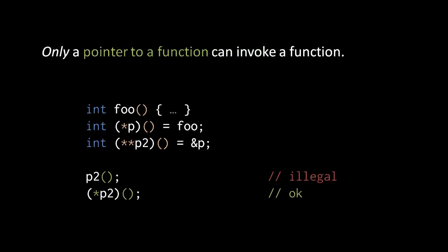It is possible to get a function pointer pointer value by referencing a function pointer variable. The reference of variable p returns a function pointer pointer. To invoke functions, however, we may only use function pointers themselves, not function pointer pointers. So we cannot invoke function pointer pointer variable p2, but we can invoke the dereference of p2. Note that parens around the dereference of p2 are very necessary, because without them, the argument list parens would have higher precedence, and so the expression would be the dereference of the value returned by a call to p2 — which is not only the wrong syntax, but would be an invalid operation, because we can't invoke p2 as a function.